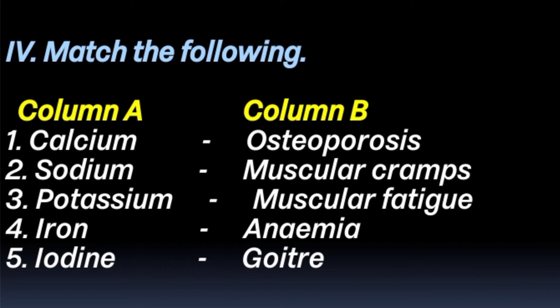4th: Iron — iron deficiency causes anemia. 5th: Iodine — iodine deficiency causes goiter.